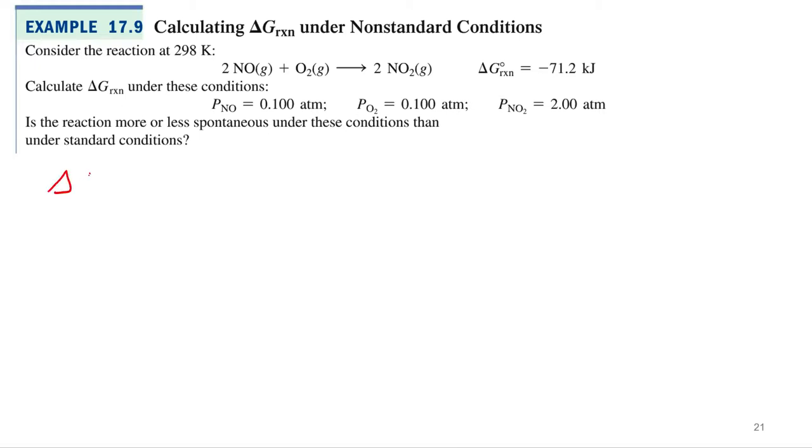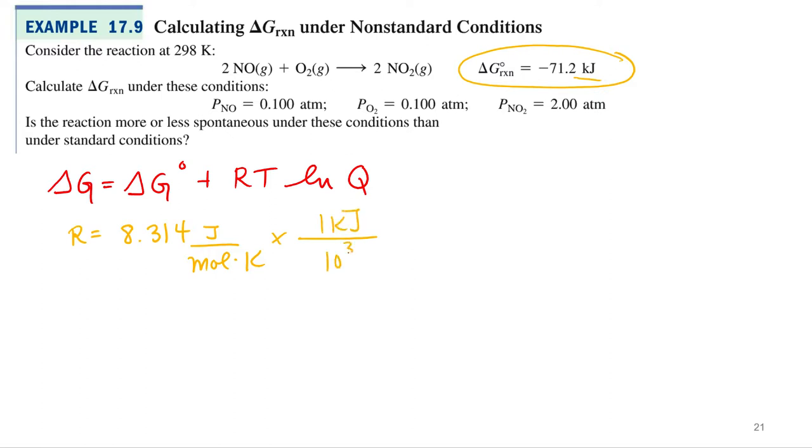Alright, so our new handy-dandy equation is delta G equals delta G standard state conditions plus RT natural log of Q. R is a constant, which for this one, since we're using it in terms of energy, we're going to use the 8.314 joules per mole Kelvin. The only problem is delta G is in units of kilojoules. So when we add them, we're going to have to make them match. So usually I'm going to have to convert this to kilojoules. So in one kilojoule, there are 1,000 joules. So that's going to be 8.314 times 10 to the negative third kilojoules per mole Kelvin.